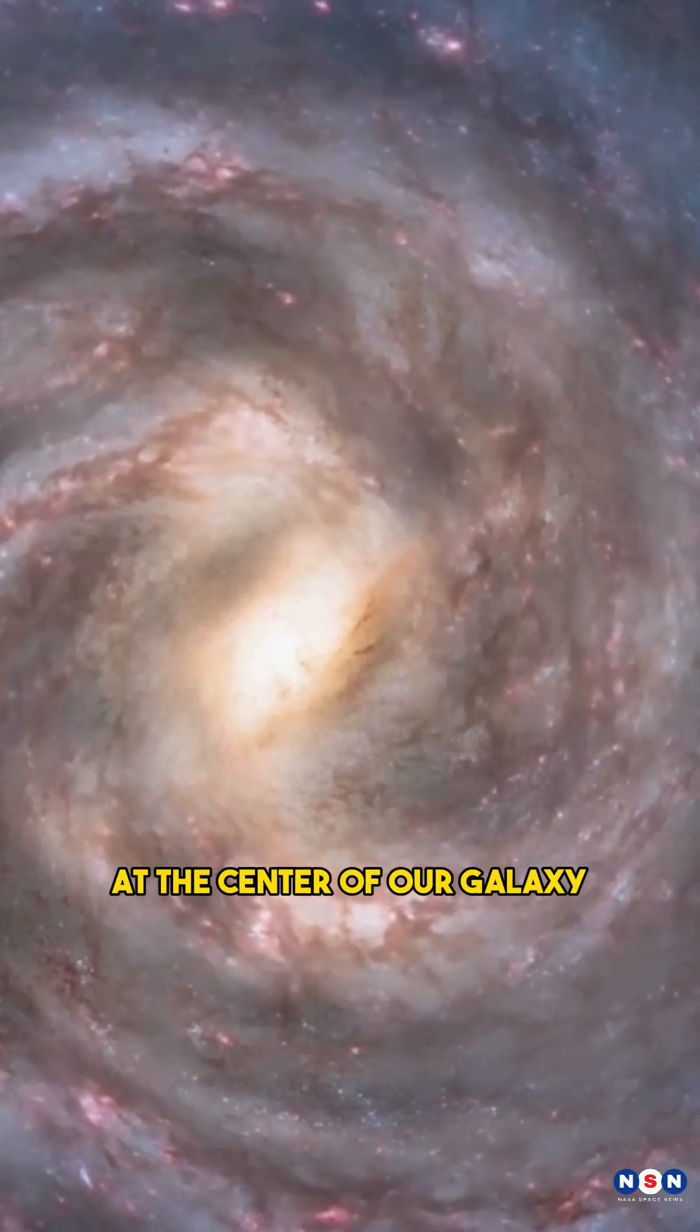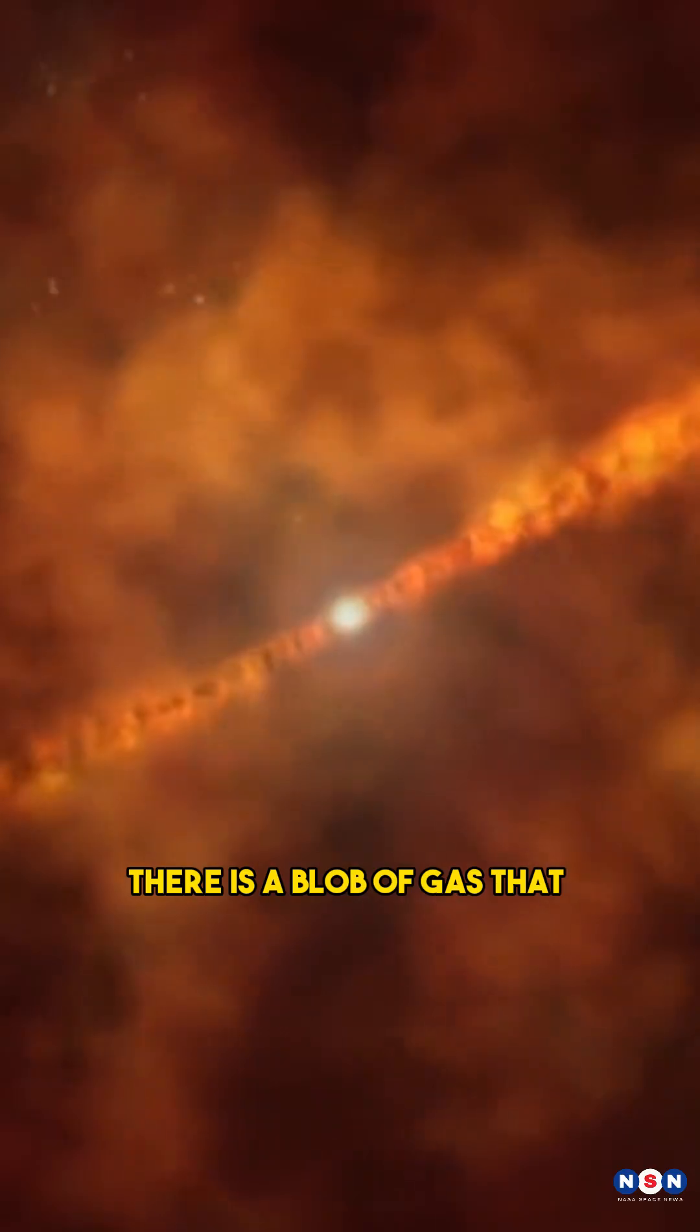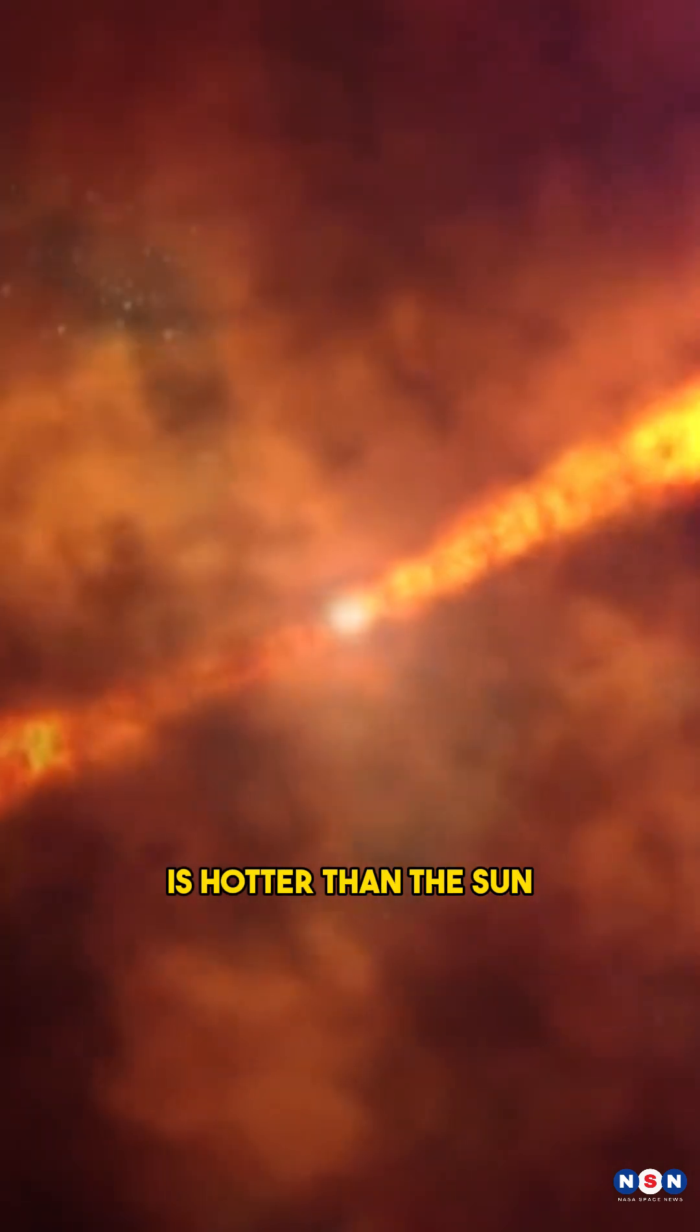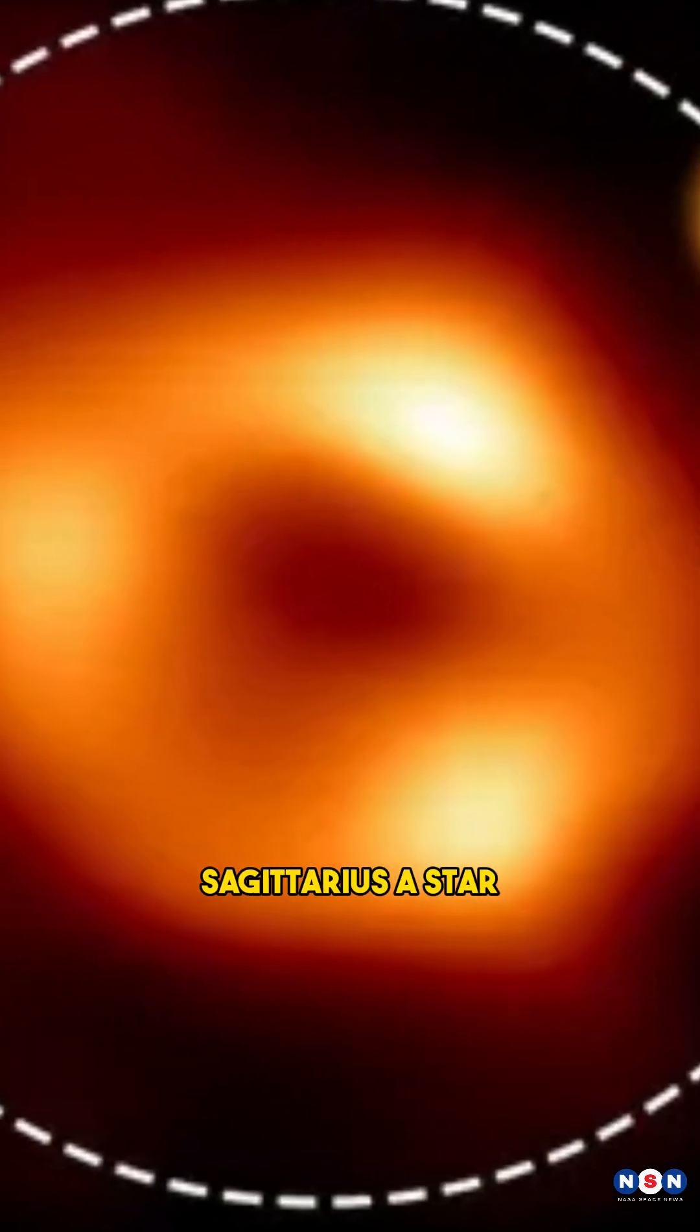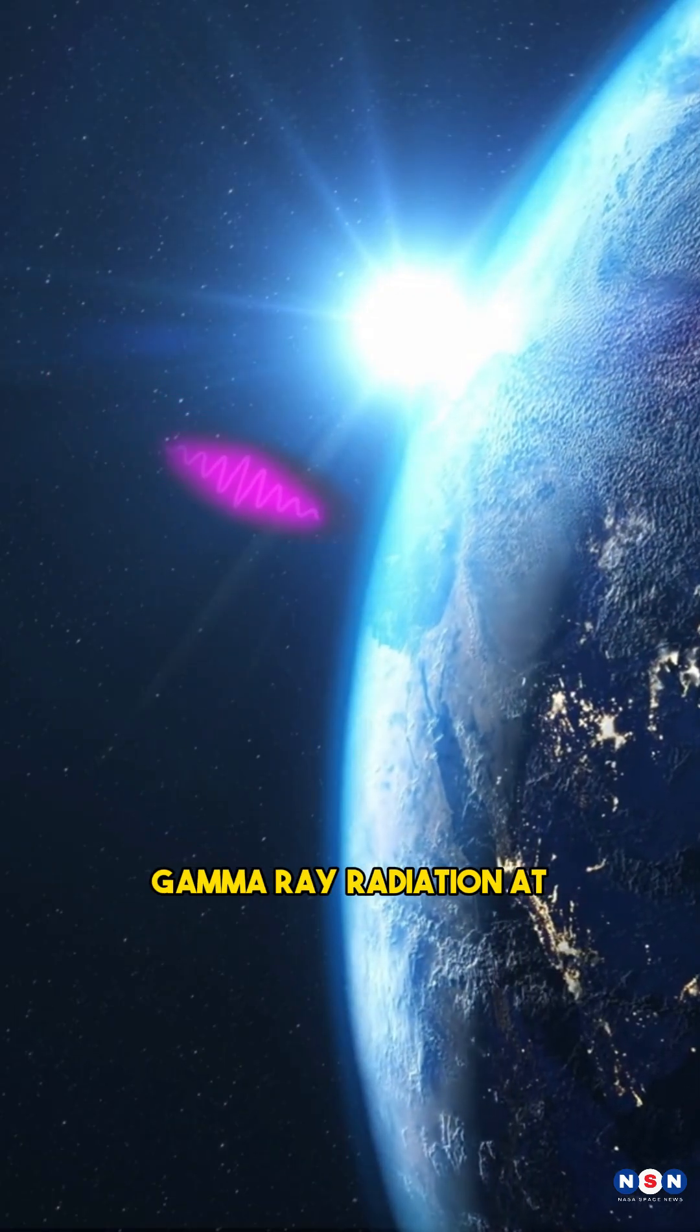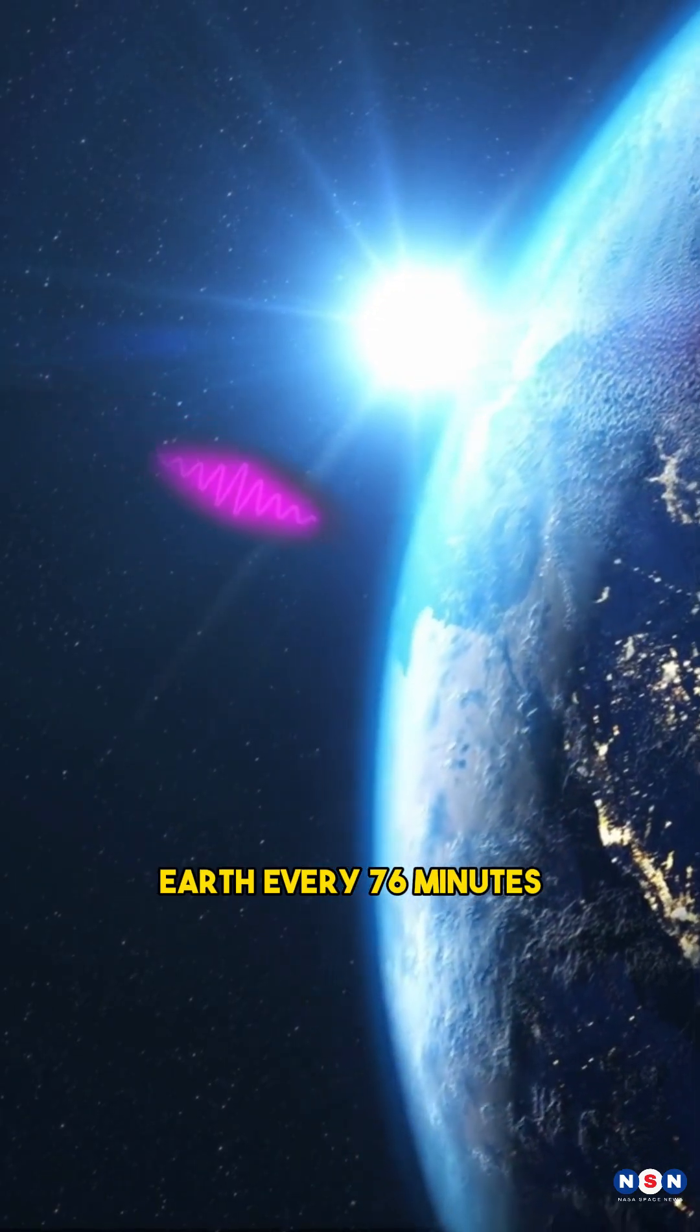There is something weird happening at the center of our galaxy, the Milky Way. There is a blob of gas that is hotter than the sun, spinning around the supermassive black hole Sagittarius A star, and shooting powerful gamma ray radiation at Earth every 76 minutes.